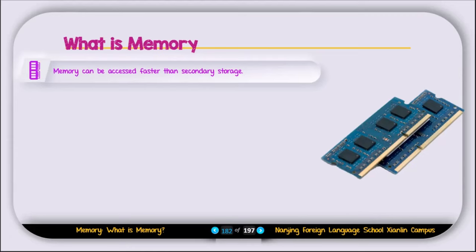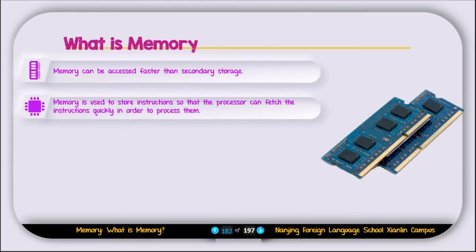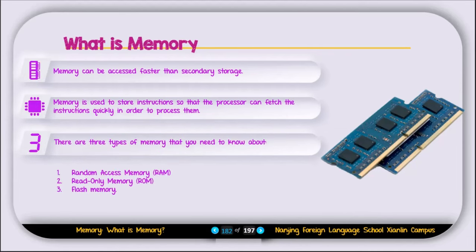So what is memory? Memory can be accessed faster than secondary storage. Memory is used to store instructions so that the processor can fetch them quickly in order to process them. There are three types of memory that you need to know: random access memory or RAM, read-only memory or ROM, and flash memory.